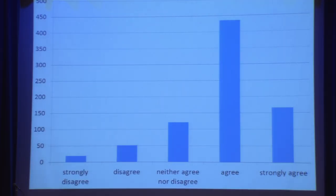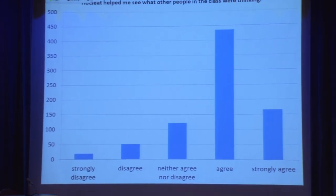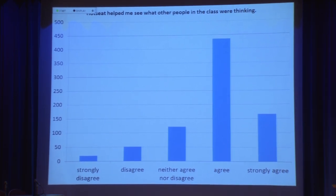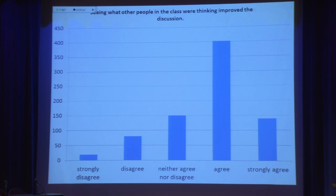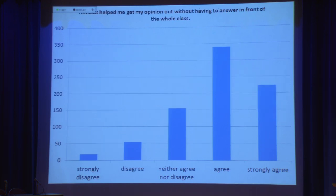Some of the survey results that ITAP came up with — they surveyed quite a number of students, and their responses relating to benefits were that they could see what other people were thinking in class. Especially when dealing with topics like same-sex marriage and cohabitation, they could actually see what others in the class were thinking. And the issue of not having to talk in front of hundreds of other students — this was something they felt Hot Seat gave them.